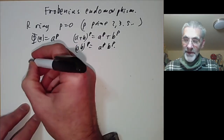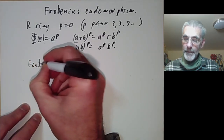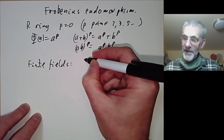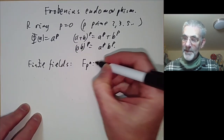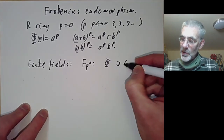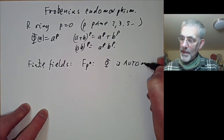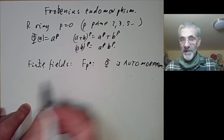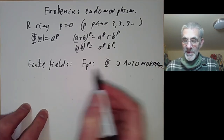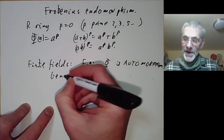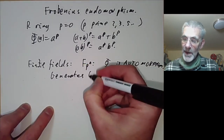For finite fields, if you look at the finite field F_{P^N}, then phi is an automorphism. It's obviously injective and the field is finite, so it must be a bijection. And we saw earlier that it generates the Galois group.